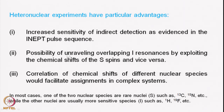Secondly, there is the possibility of unraveling overlapping I resonances by exploiting the chemical shifts of the S spins, and vice versa. Since you are using two different kinds of nuclei, the overlap of chemical shifts of a particular type of protons can be resolved by making use of the carbon spins or the nitrogen spins. This is specifically important in complex molecules where there are a larger number of signals of a particular species that invariably overlap.